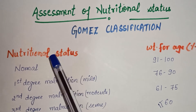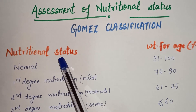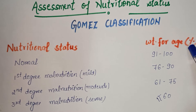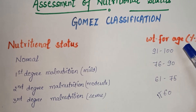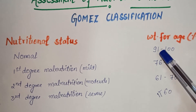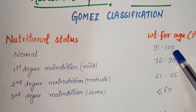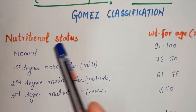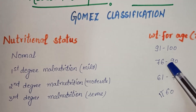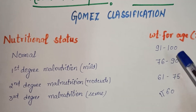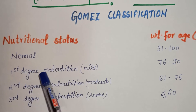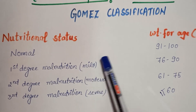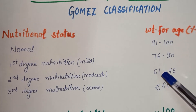We will classify the nutritional status according to weight-for-age percentage. If the weight-for-age percentage is between 91 to 100 percent, the child has normal nutritional status. If the weight-for-age is 76 to 90 percent, the child has first degree or mild malnutrition.